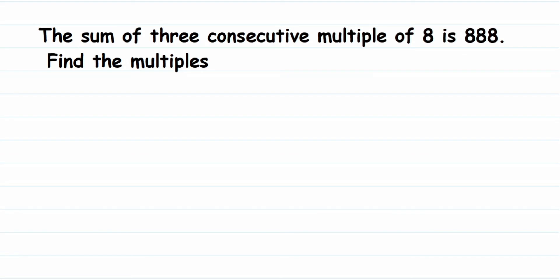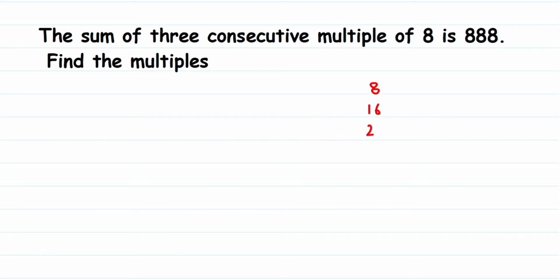Consecutive means numbers one after the other — like 1, 2, 3, 4. If I take multiples of 2, I get 2, 4, 6, 8, and so on. Make sure you're not skipping a number, otherwise they won't be consecutive. Similarly, consecutive multiples of 8 would be 8, 16, 24, 32, and so on — not skipping any.